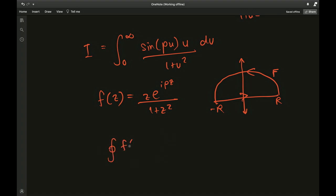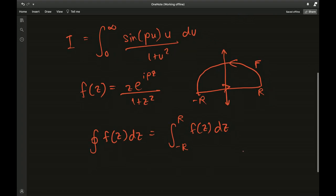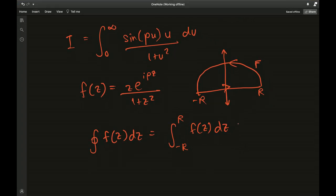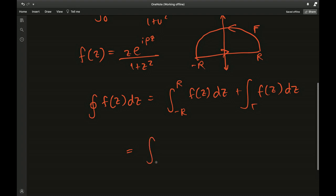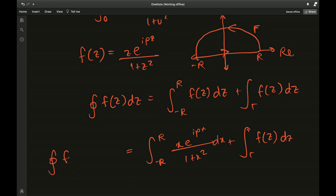The contour integral of f of z dz along this path is integral from minus r to r of f of z dz plus the integral over gamma of f of z dz. If you simplify this minus r to r part, since the integration is happening only on the real axis, you can change the z to an x because the imaginary part is zero. So we have x times e to the ipx over 1 plus x squared dx plus integral over gamma of f of z dz equals the contour integral of f of z dz.